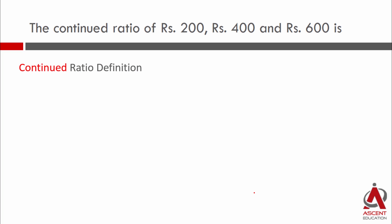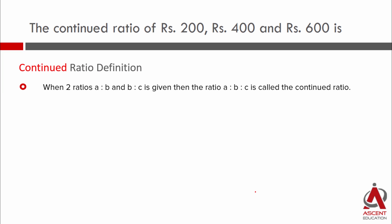What is the definition of continued ratio? When we have A is to B and B is to C, combining them together gives us A is to B is to C — that is called continued ratio.